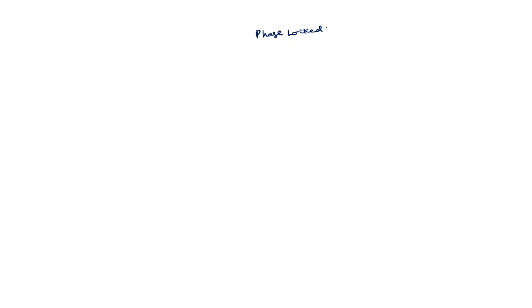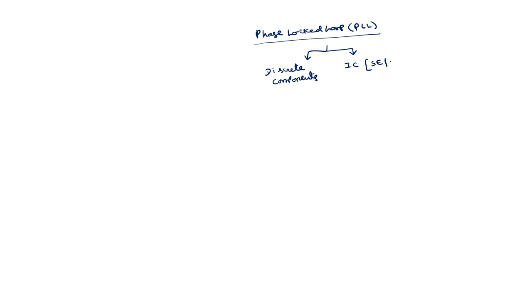In the previous lectures, we have discussed about a specialized IC called the 555 timer, which generates precise time delays and has many applications. Today, I will discuss one more such type of specialized IC called the Phase-Locked Loop, or PLL. This PLL can be implemented using discrete components or you can use the IC also. The IC name is SE NE 560. First I will discuss the PLL using discrete components, and later I will discuss the IC details.